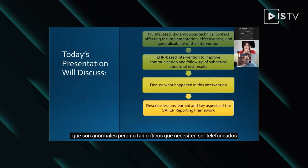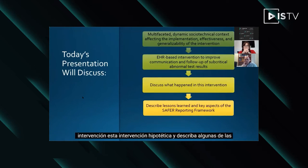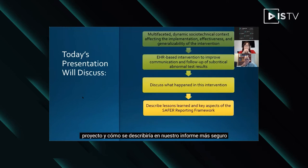These are results that are abnormal but not so critical that they need to be telephoned to the ordering provider. And then we'll talk about what happened during this hypothetical intervention and describe some of the lessons we learned while we were developing this project and how that would be described in our SAFER reporting framework.